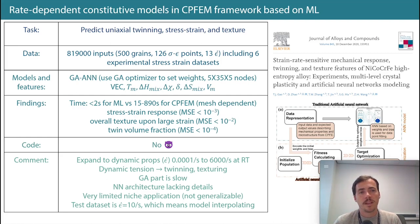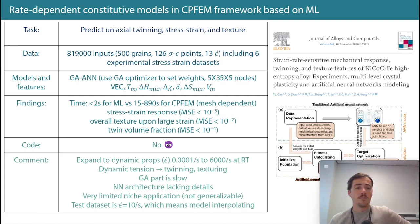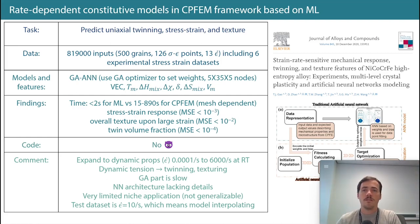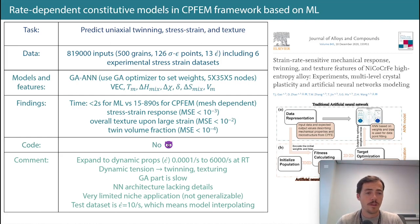How about this paper? This is a paper by Gao in 2020 in the Journal of Alloys and Compounds. They were trying to do something different — predict uniaxial twinning volume, stress-strain behavior, and texture evolution. This is way beyond a single property; they're trying to get a comprehensive mechanical performance picture. Their dataset was huge but very specific to essentially one material. In total they had over 800,000 data points from simulations: 500 grains, 126 data points along the stress-strain curve, and 13 different strain rates, plus 6 experimental stress-strain measurements.